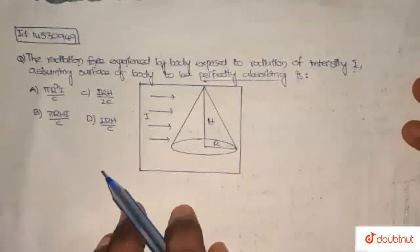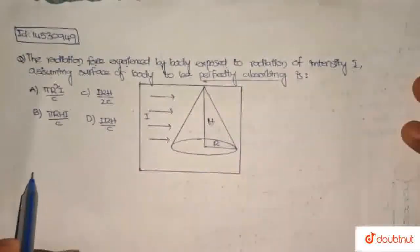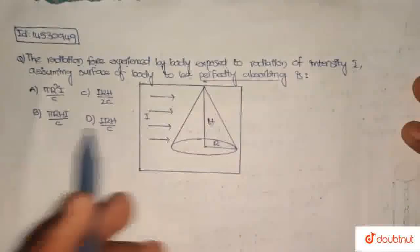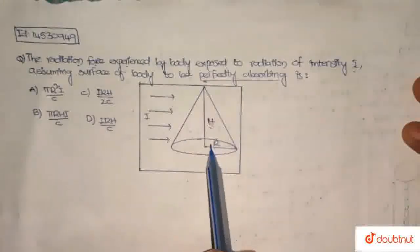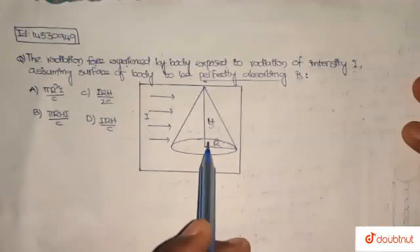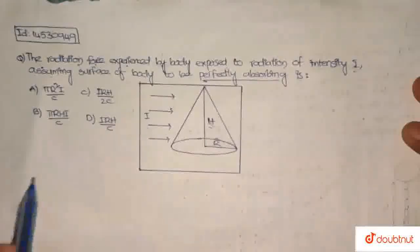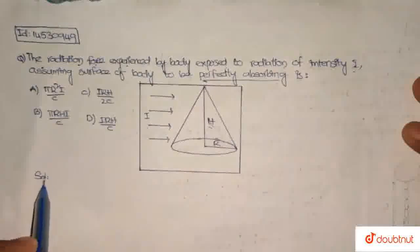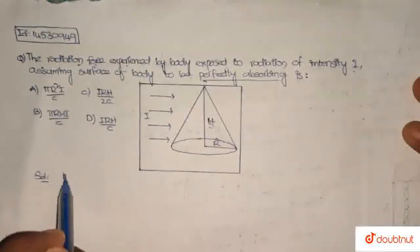So here we can see the height H and the radius R. Now this is the radiation pressure.